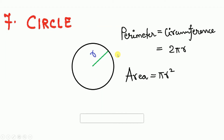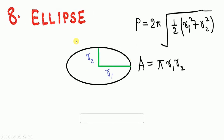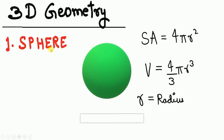For the circle: area = π r² and perimeter (circumference) = 2πr. Next is the ellipse, which has a half-major axis r₁ and a half-minor axis r₂. Area = π × r₁ × r₂, and perimeter = 2π × √(½(r₁² + r₂²)).